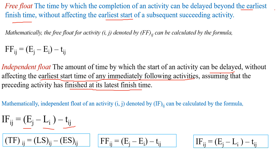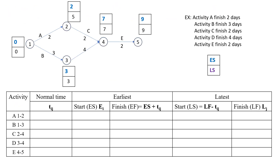These are the important formulas we have to remember for the calculation of total float, free float, and independent float. Now let us see the example problem to determine the three different floats. The activities given are A, B, C, D, and E, with normal activity times of 2 days for A, 3 days for B, 2 days for C, 4 days for D, and 2 days for E. In the previous lecture, we calculated the earliest time and the latest time by forward and backward pass computations.